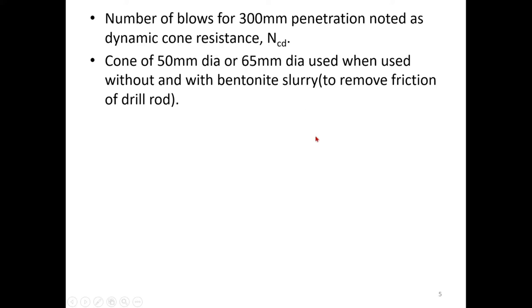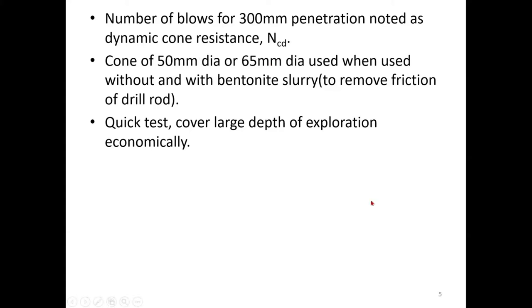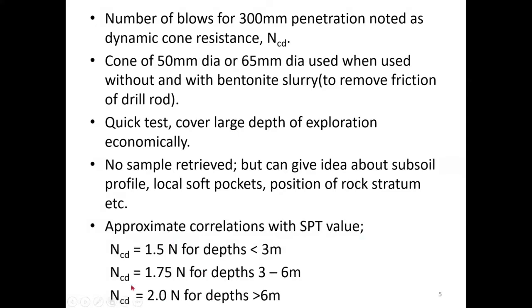There are two types of cones: 50 mm dia or 65 mm dia. You can use it with or without bentonite slurry, which is used to remove the friction of the drill rod. This is a very quick test — it can cover large depths of exploration economically because you don't have to make a borehole, reconnect an open drive sampler, do SPT, collect samples, and repeat the process. Here you simply drive your cone into the soil — no sample collection. That's a disadvantage also, but you still get good data: your NCD, which can be correlated to SPT values.